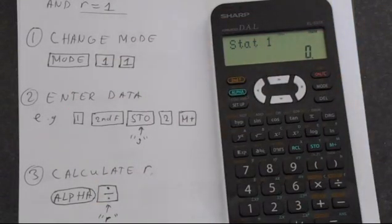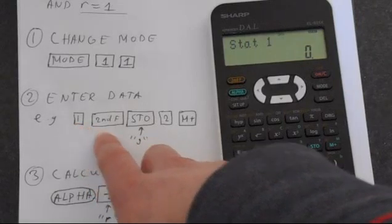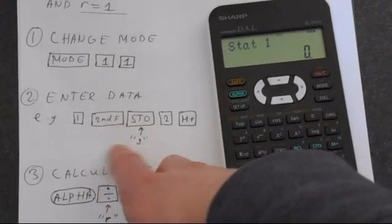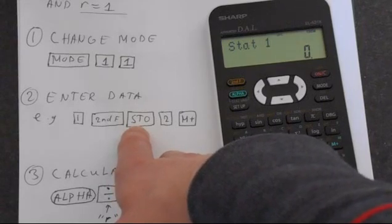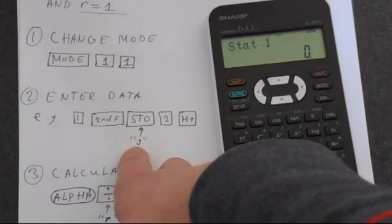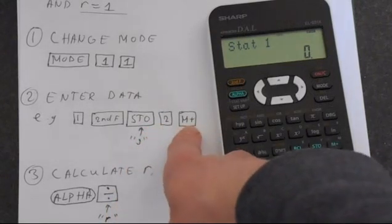So now let's enter the data. For example, we'd press 1, and then we need to get a comma. So we're pressing 2nd function, then the STO button which has got the comma on it. Then 2 goes after the comma, and M plus to save it.